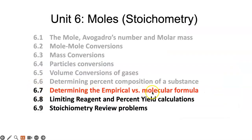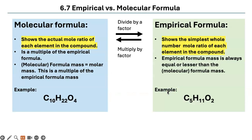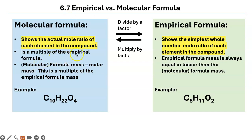So here is where we are. We are not doing any more stoichiometry problems, but you are doing problems containing mathematical relationships from those. Write this down in your notebook. Let's compare the molecular formula with the empirical formula. The molecular formula shows the actual mole ratio of each element in the compound, whereas the empirical formula shows the simplest whole-number ratio of the moles of each element in the compound. The molecular formula is a multiple of the empirical formula.